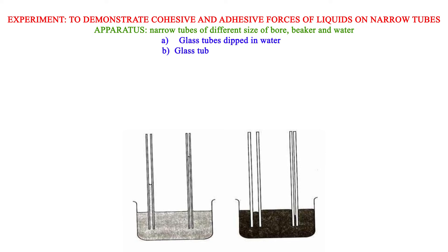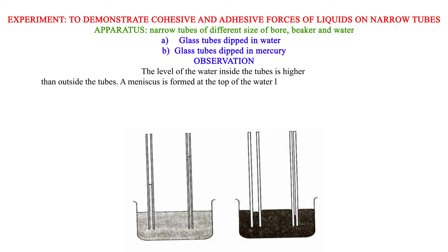B. Glass tubes dipped in mercury. Observation: The level of the water inside the tubes is higher than outside the tubes. A meniscus is formed at the top of the water level and it curves upwards (concave).